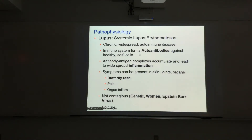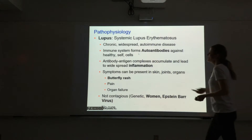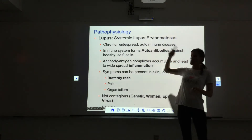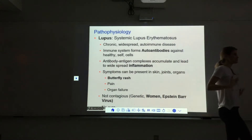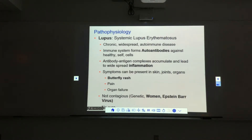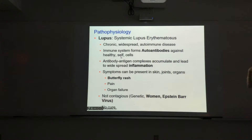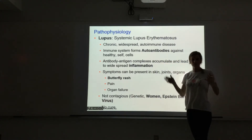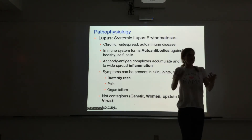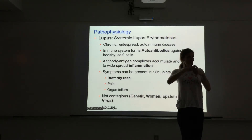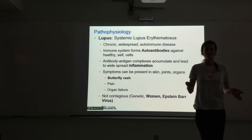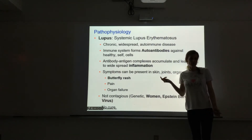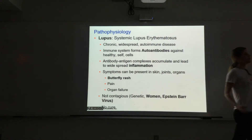Lupus is what we call an autoimmune disorder — 'auto' means self. So you make autoantibodies, antibodies against yourself. Something goes wrong and your immune system starts fighting yourself. The antibodies find their antigens, which are your normal antigens all over your body, and you start forming these little complexes everywhere. This causes inflammation — increased blood flow and permeability — all over the place when there's not really a problem.